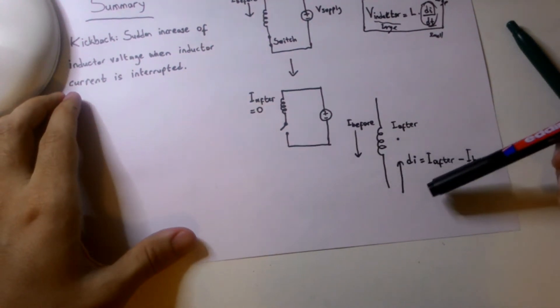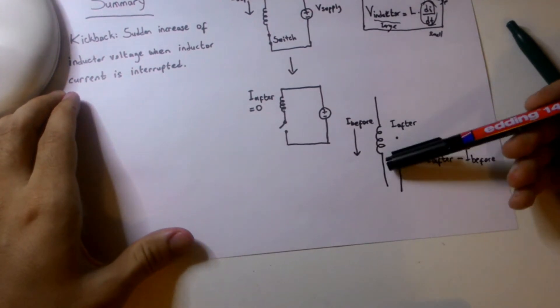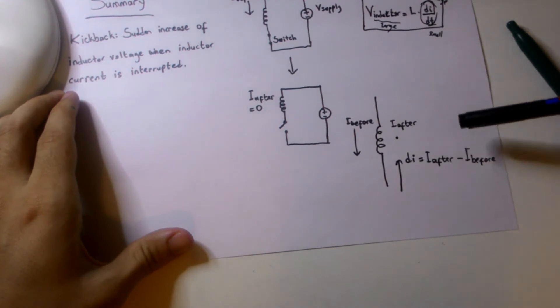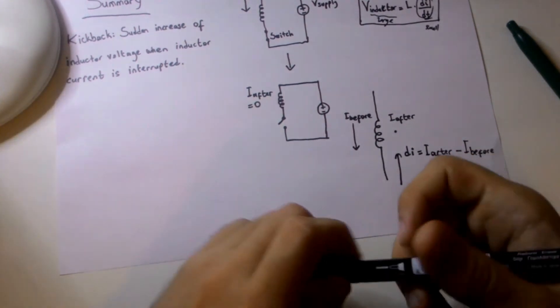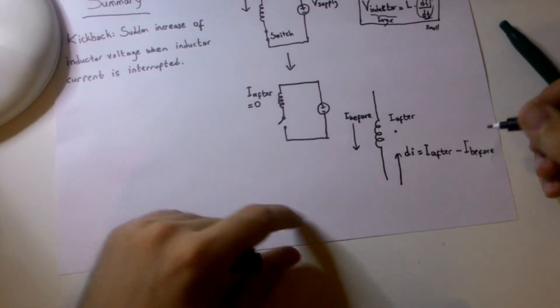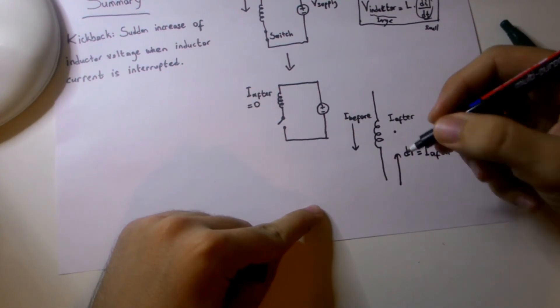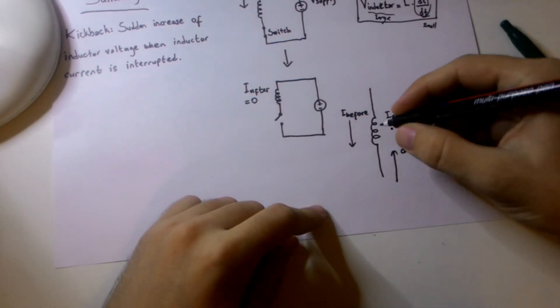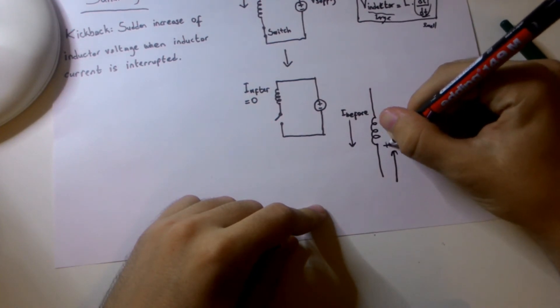So my induced voltage is going to be in the polarity to resist this change in current, so it's going to be in this polarity.